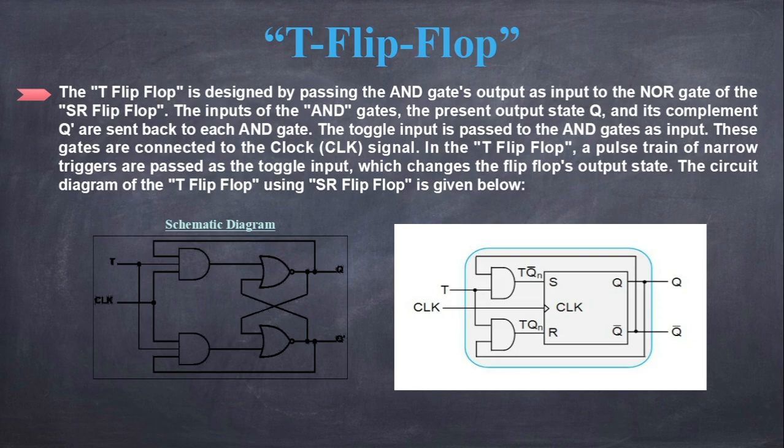These gates are connected to the clock CLK signal. In the T flip-flop, a pulse train of narrow triggers are passed as the toggle input, which changes the flip-flop's output state. The circuit diagram of the T flip-flop using SR flip-flop is given below.